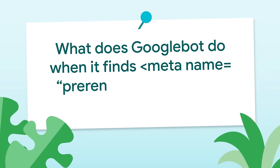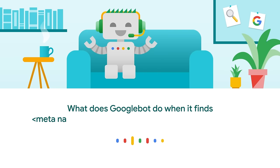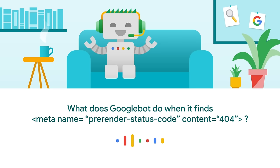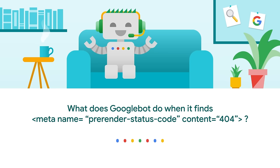Martin is asking: what does Googlebot do when it finds a meta name pre-render status code content 404 tag? Googlebot currently ignores that status code. I guess this is coming from a single page application that is client-side rendered and you want to avoid soft 404s. In that case, consider adding a meta tag for robots noindex, or redirect to a page where the server responds with a 404 status code. For more information, see our documentation at developers.google.com/search.